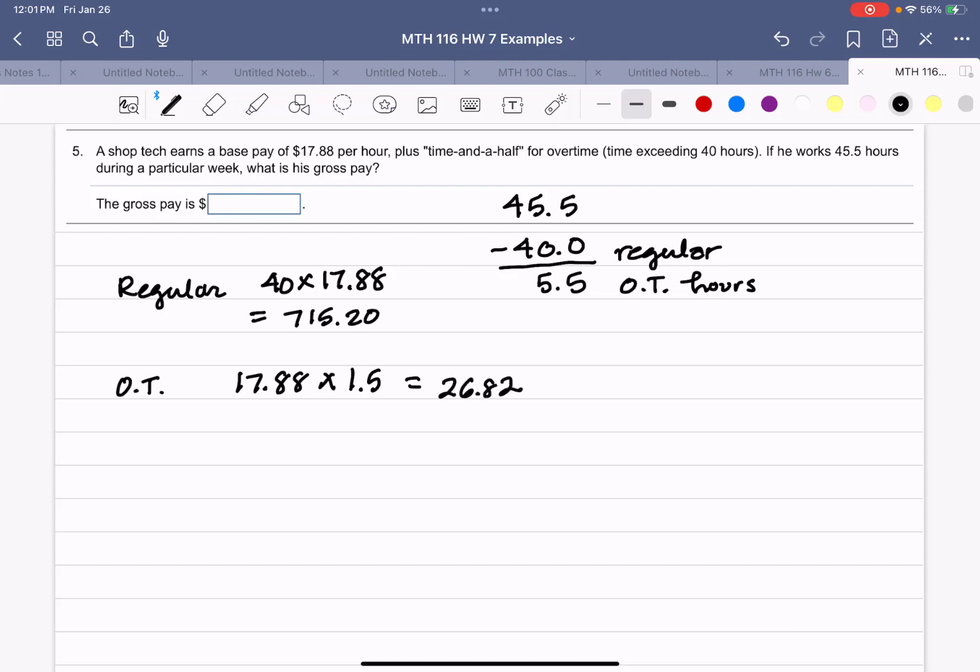So we take the 5.5 overtime hours, we multiply it times the overtime rate, 5.5 times $26.82, and we get for overtime $147.51.